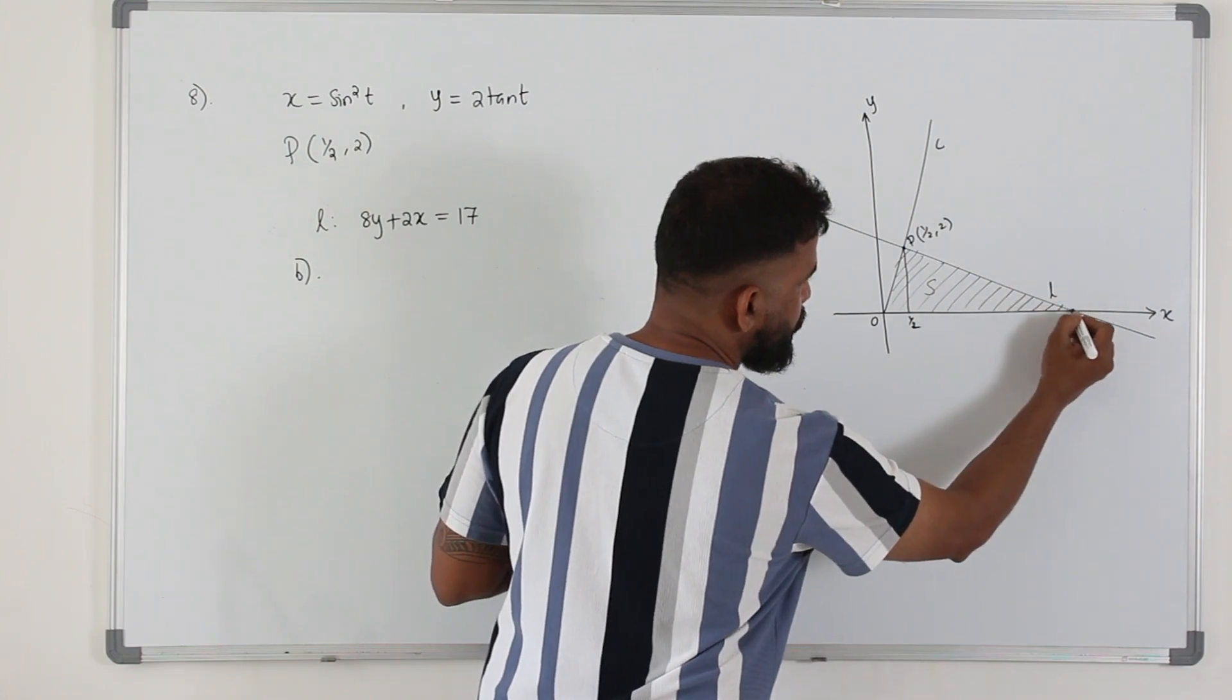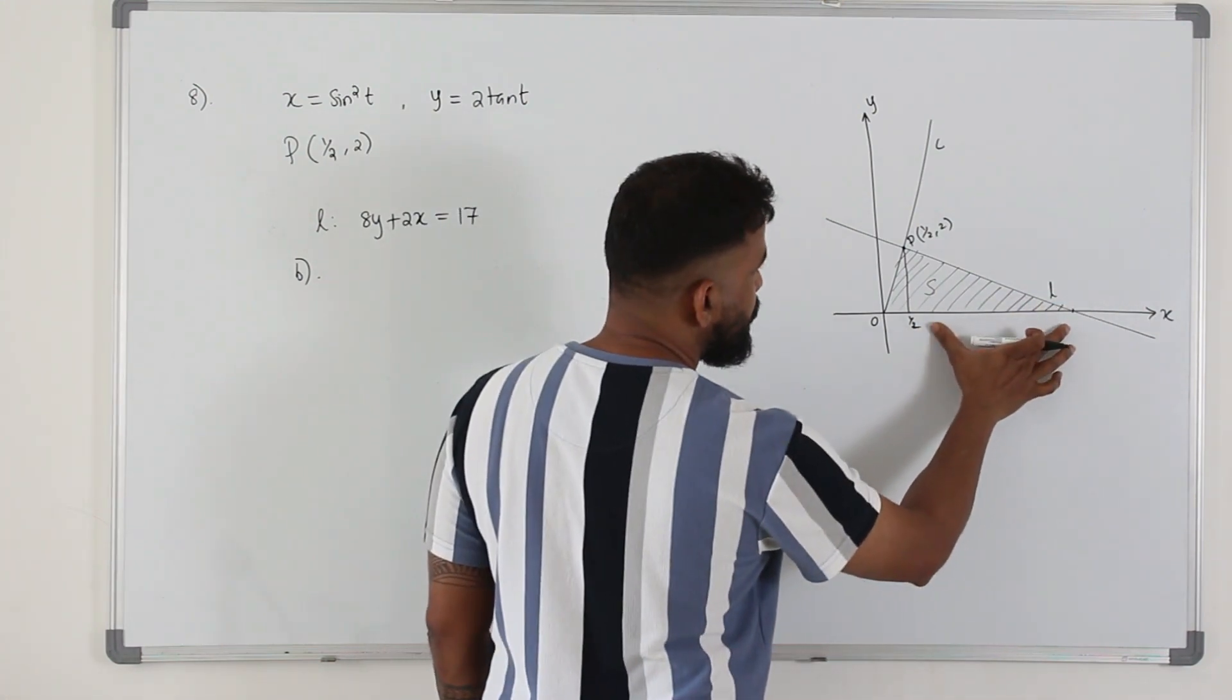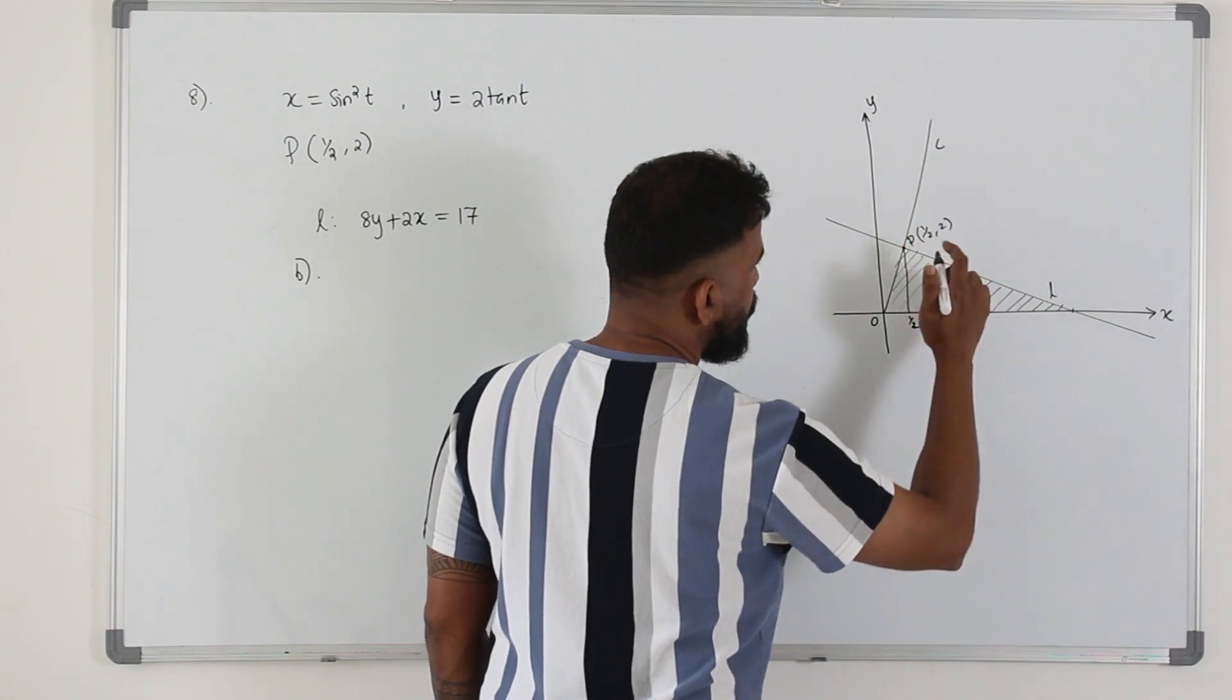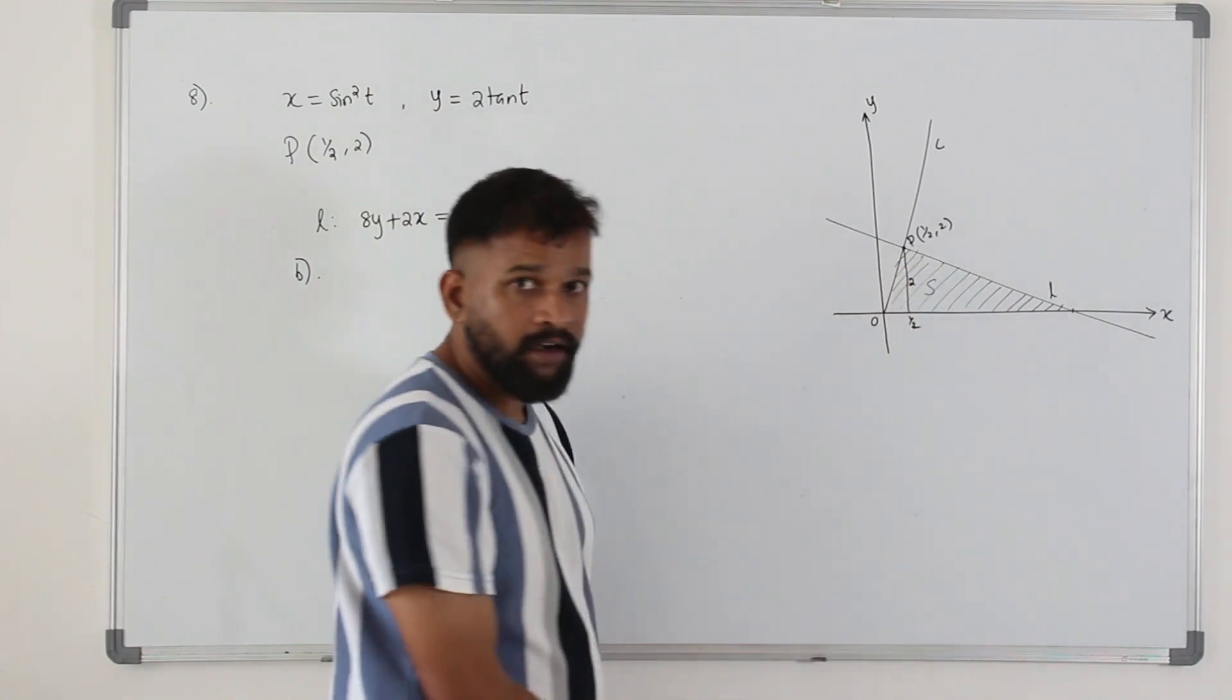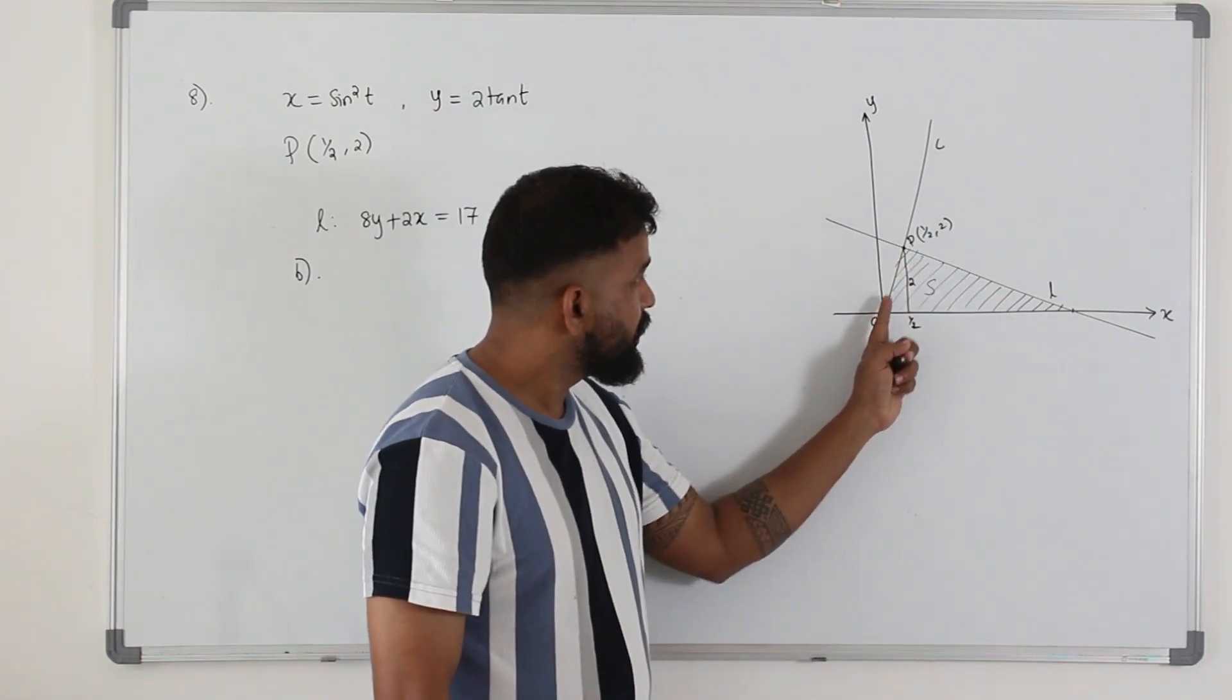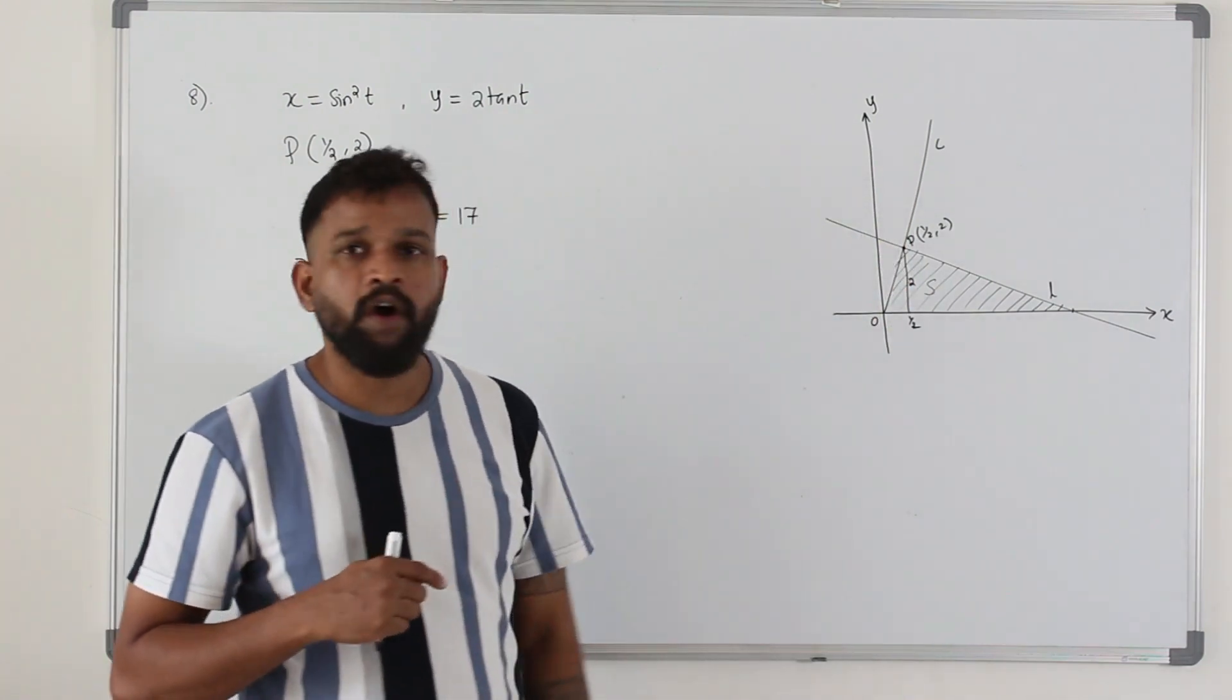And then find the x-coordinate of the line, the x-axis of the line. So you will get this length. This is the y-coordinate of this point, 2. You can find the area of this triangle plus this little area that's basically below the curve. So it's up to you how you want to find it.